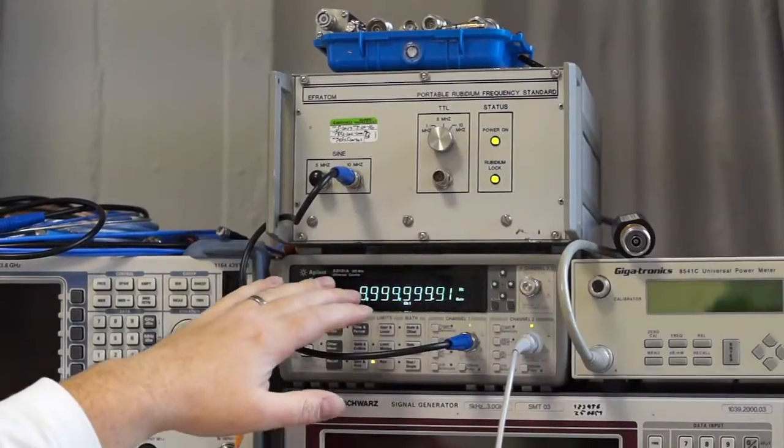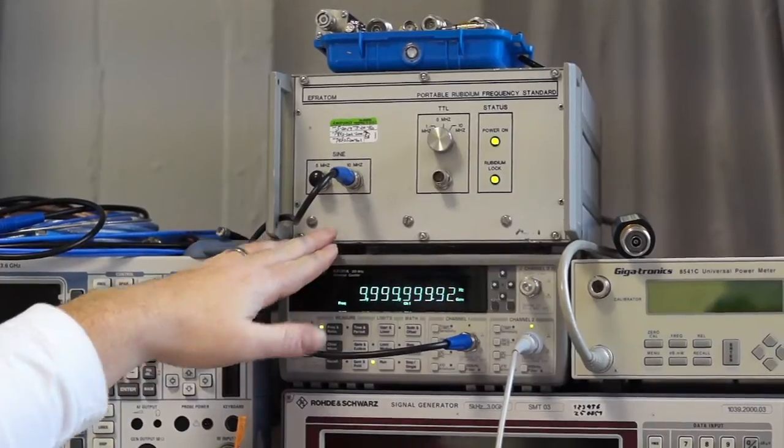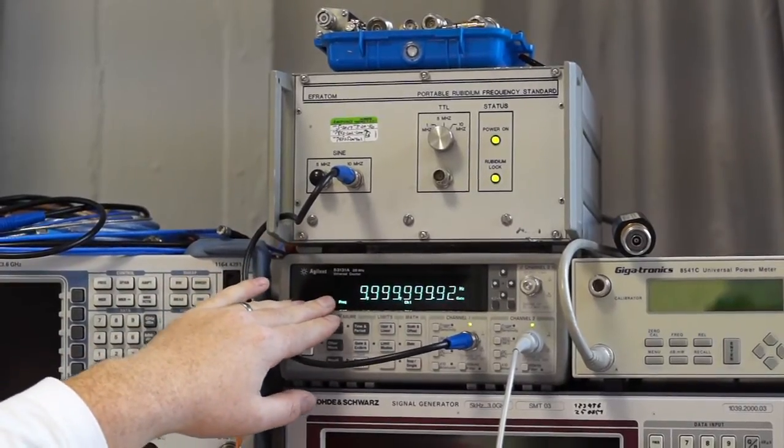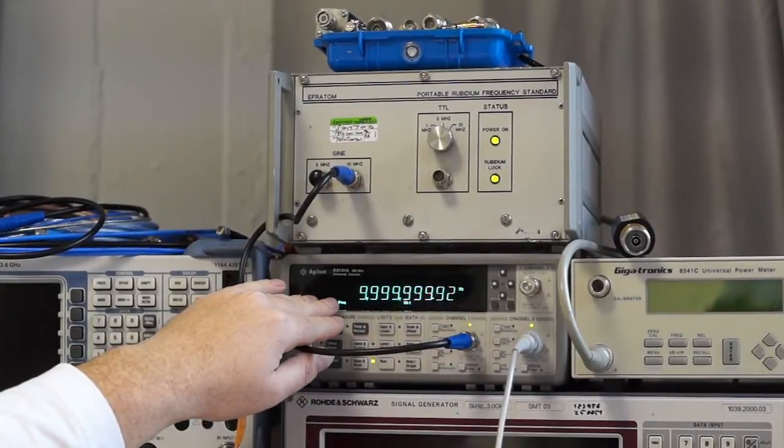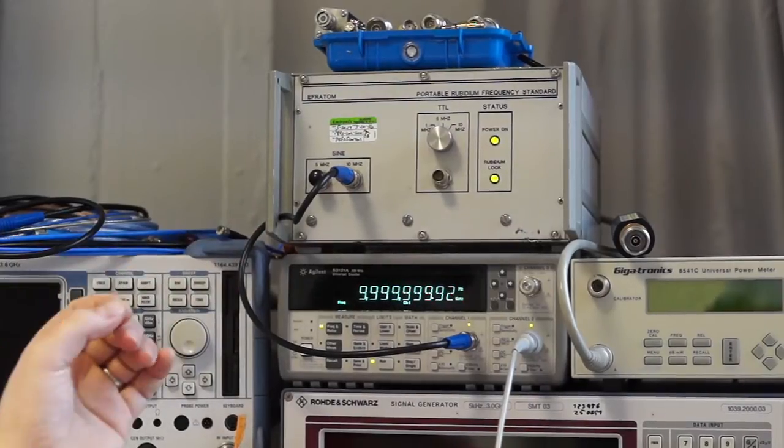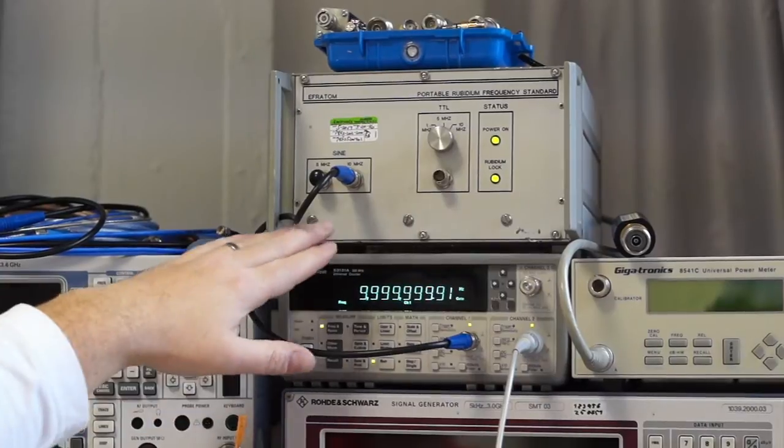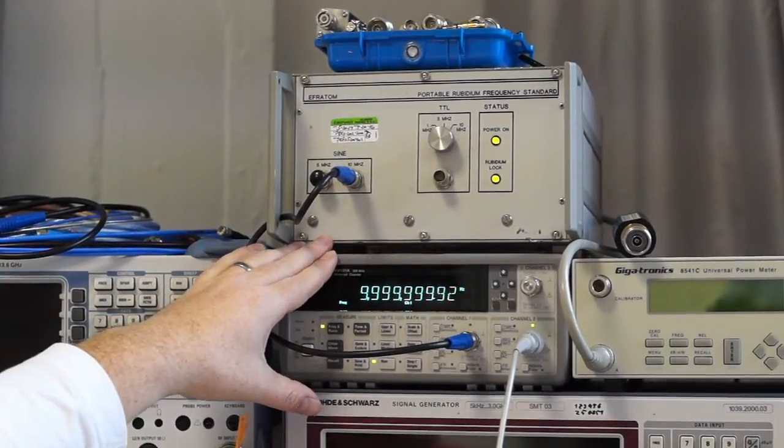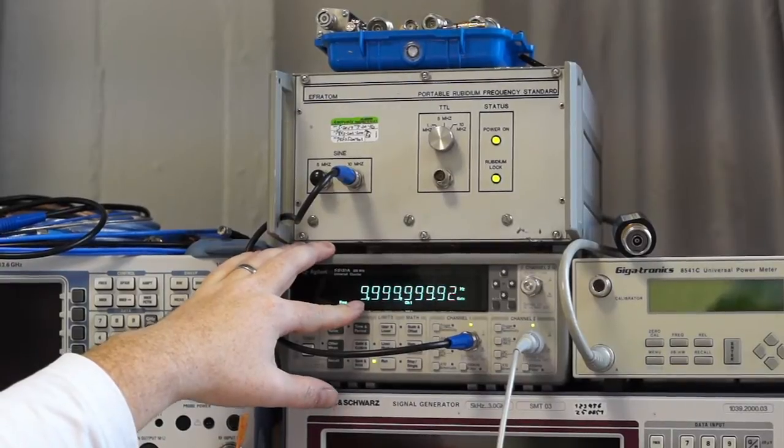So we are counting the 10 MHz output signal of the rubidium frequency with our frequency counter against its internal clock. This gives us a double safety net that our clock is really precise and that the units we ship are within spec. If we compare the 10 MHz signal to the internal clock, we expect a readout very close to 10 MHz.